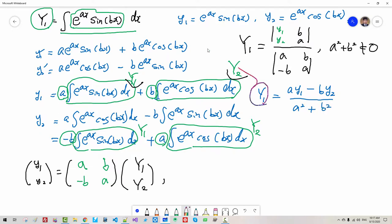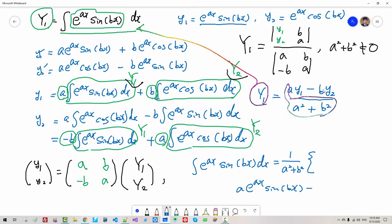Here, y₁ is this integration, so ∫e^(Ax)sin(Bx)dx equals 1/(A² + B²) times (A·e^(Ax)sin(Bx) - B·e^(Ax)cos(Bx)), don't forget integration constant plus C.